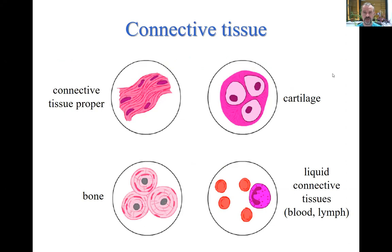Generally speaking, joints are formed by connective tissue. They are formed by bones, which provide mechanical support, then by cartilage. In between the cartilage we can find a fluid — not blood, not lymph, but a special synovial fluid — and the capsule and other special structures are formed from connective tissue proper. So all four kinds of connective tissue can be found in joints.